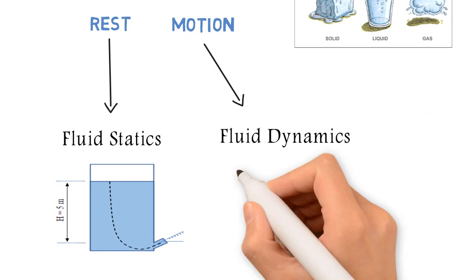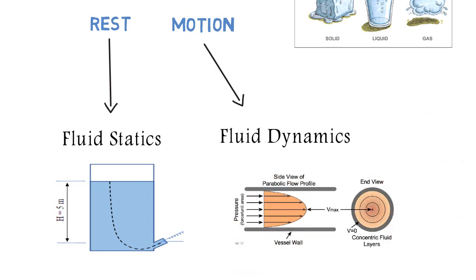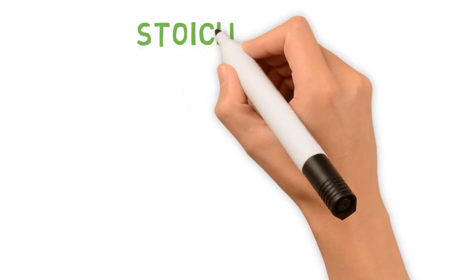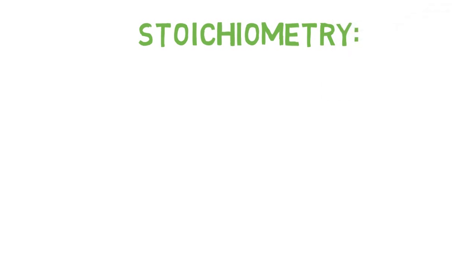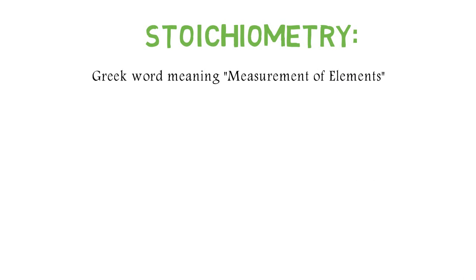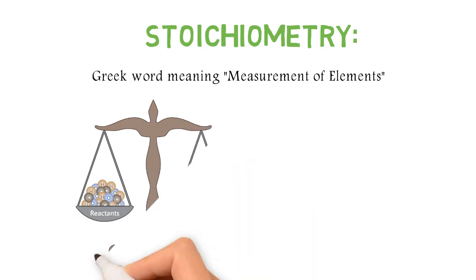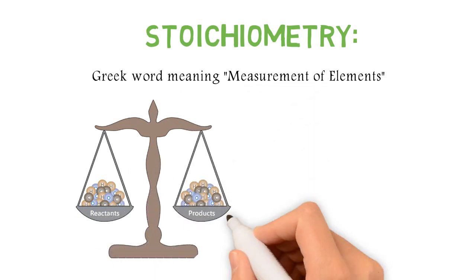Next is stoichiometry. It is basically related with mass and energy balance. By origin, it is a combination of Greek words which means measurement of elements. In this, we study how masses of reactants and products are involved in a chemical reaction and how we can calculate the energy requirement for the process.